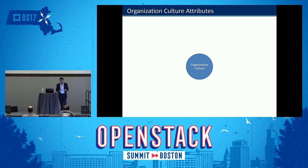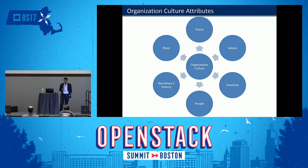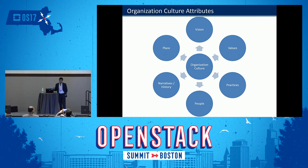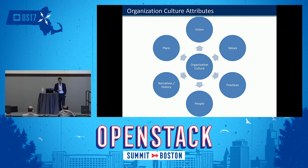Let's look at the attributes of organization culture. It consists of vision — which defines the background for the organization; values — what the organization stands for; practices — particular behaviors people exhibit in various situations; people — the team members; narratives and history — the background of the organization; and finally, location — whether in the US, Europe, Japan, or India — which also plays a critical role in organization culture.